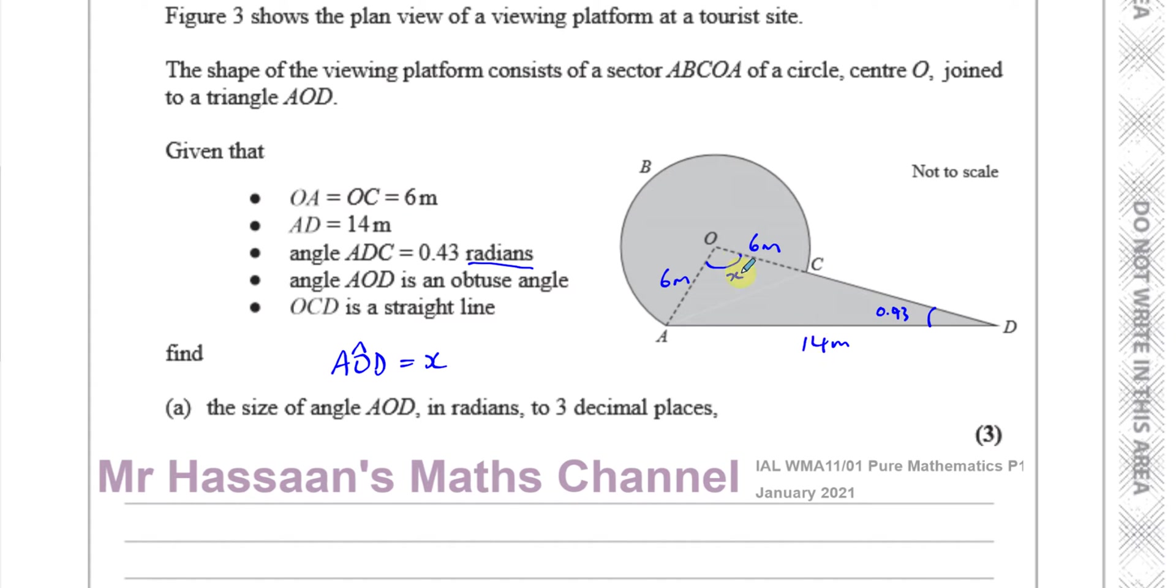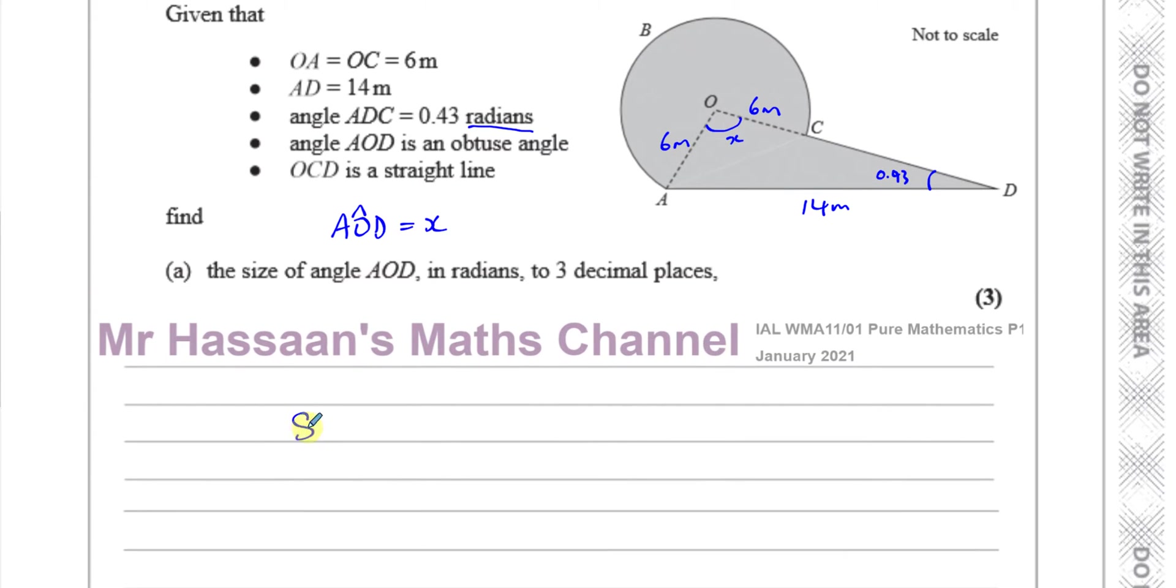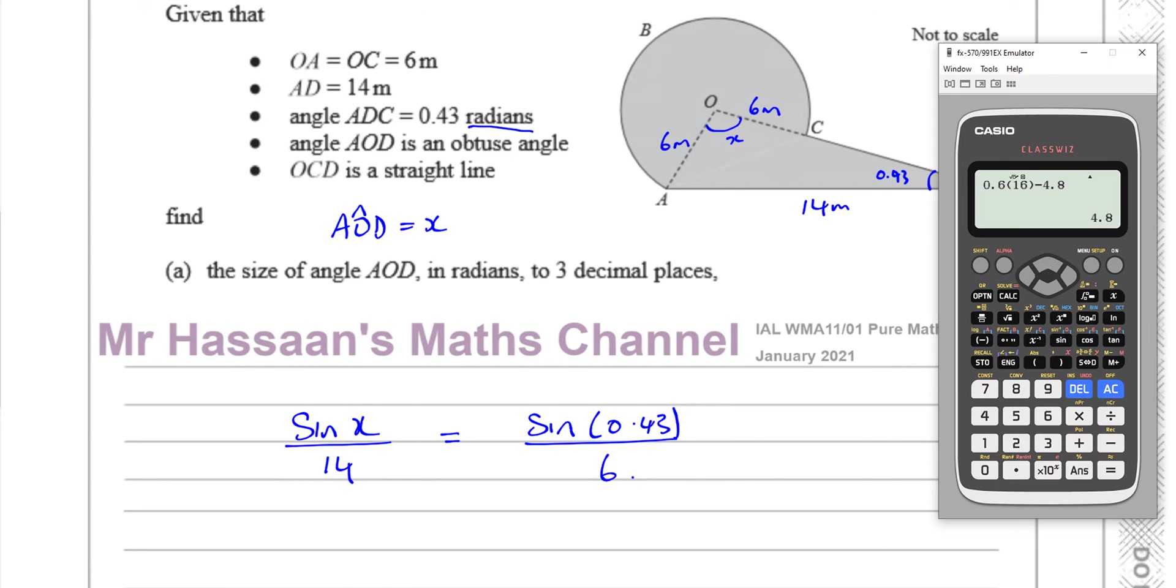Now, what we can see here is we have pairs of opposites. We have X, the angle X and 14, the angle 0.43 radians and 6. So, we can use the sine rule here. I can say the sine of angle X divided by the length opposite it, 14, is equal to the sine of the angle 0.43 radians over the side of the length opposite it.